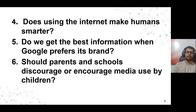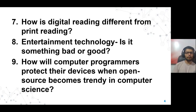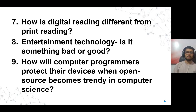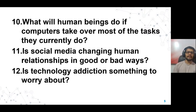Number six: should parents and schools discourage or encourage media use by students? Number seven: how is digital reading different from print reading? Number eight: entertainment technology — is it something bad or good? Number nine: how will computer programmers protect their devices when open source becomes trendy in computer science? This is the most trending topic. Number ten: what will human beings do if computers take over most of the tasks they currently do? This is all about AI, artificial intelligence, and machine learning, because they are replacing tasks that humans do.